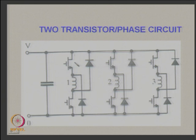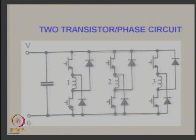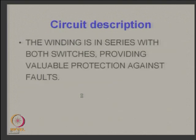One standard topology is the two-transistor-per-phase converter: you have one transistor at the top and one at the bottom, with the winding in series with both switches. Two freewheeling diodes — one across each transistor — provide freewheeling paths. The DC source is connected, three coils are energized at different instants decided by rotor position. The winding in series with both switches provides good protection against faults. When switched off, freewheeling occurs through the diodes.